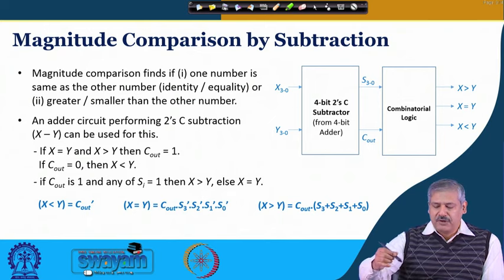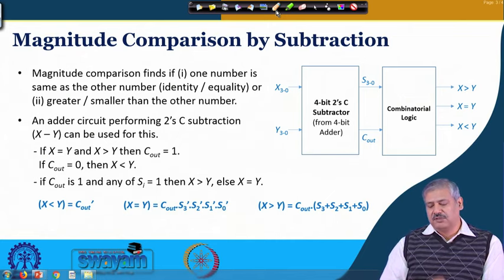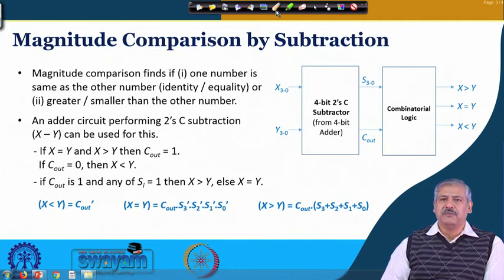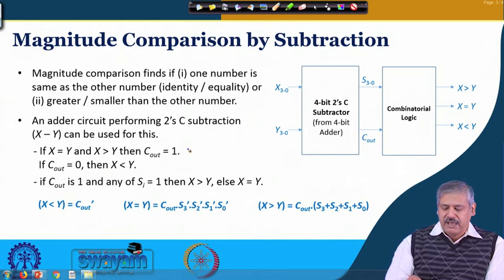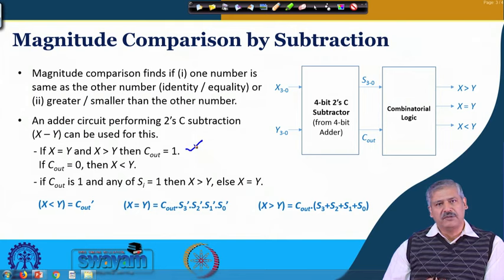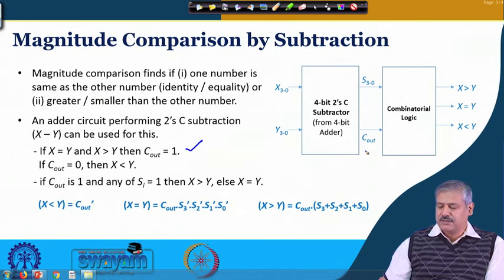We can have a subtractor circuit developed from 2's complement arithmetic and the full adder circuit. Using 2's complement subtraction, when x is equal to y and when x is greater than y, we see that the carry out generated is 1.